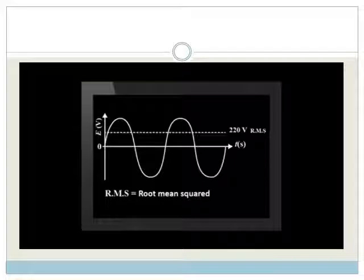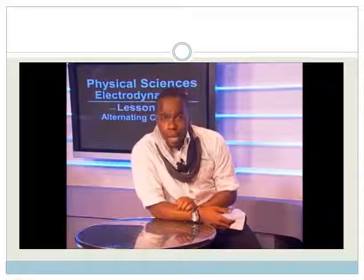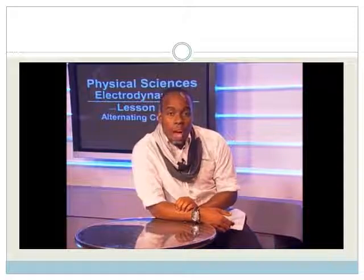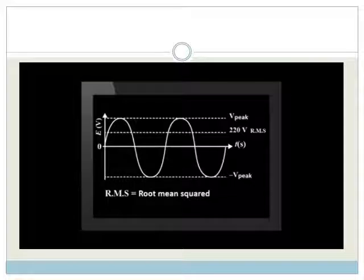The other marking you would have seen on the cell phone charger is 220 VAC, or 220 volts, alternating current. The 220 is the average voltage. The correct term for this average is the RMS voltage. RMS stands for root mean square.